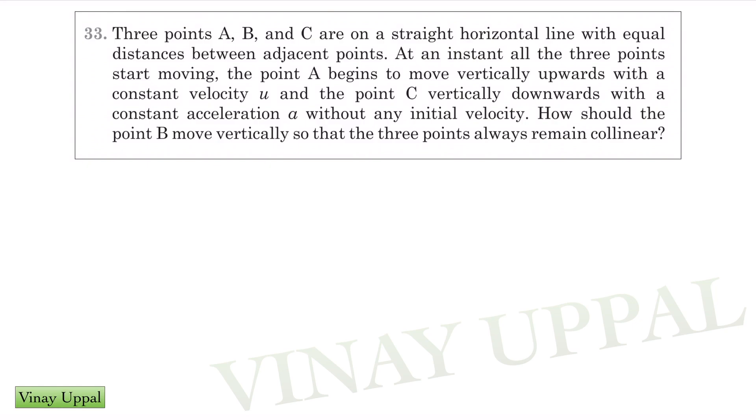Let's take a look at this question. Three points A, B, and C are on a straight horizontal line with equal distances between adjacent points. At an instant all three points are moving. Point A begins to move vertically upwards with a constant velocity u, point C vertically downwards with a constant acceleration a without any initial velocity. How should B move vertically so that the three points always remain collinear?